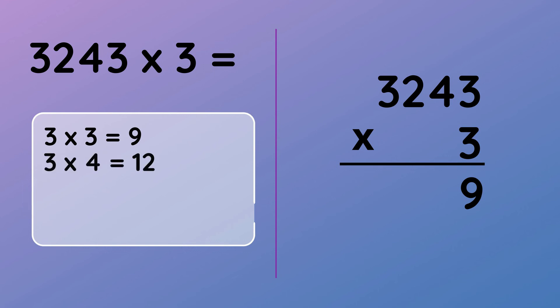Now we do 3 multiplied by 4 which gives us 12. We cannot put the entire two digits in the answer space. So our second digit stays which is 2 and our first digit goes across to the hundreds column to be added in over there.